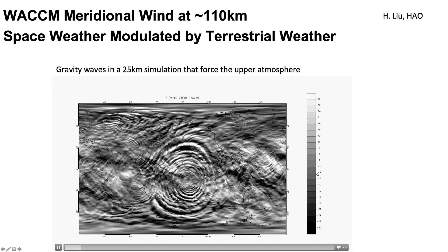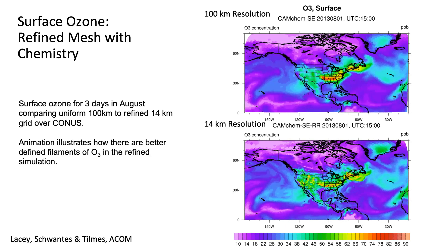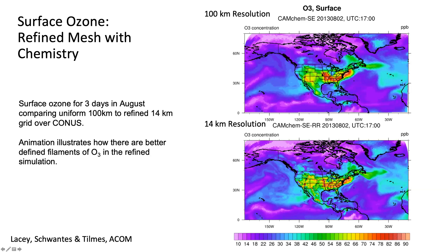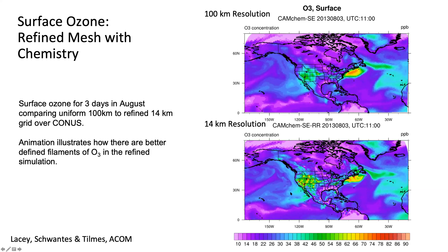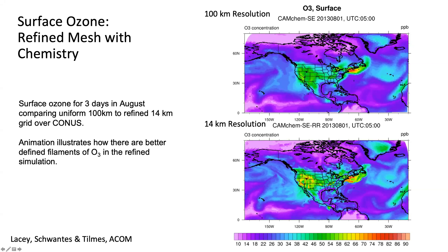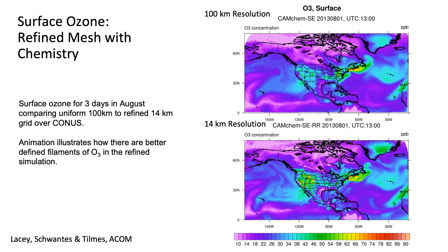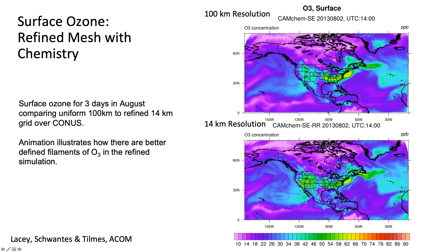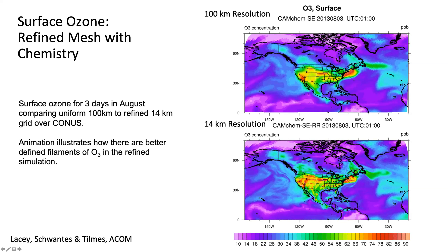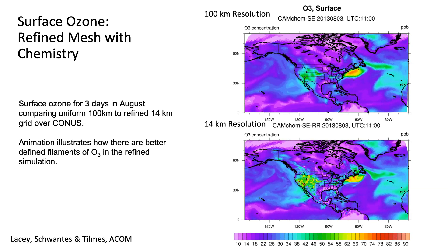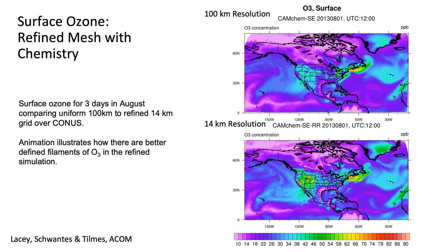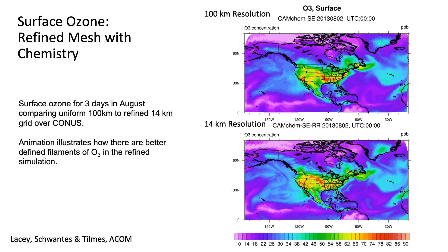This is a surface ozone representation. The top is 100-kilometer resolution near-surface ozone. The bottom is a refined mesh 14-kilometer version of the simulation, just three days in August. You can see the modulation of ozone with the diurnal cycle and the filamentation and high-resolution structure you get in the 14-kilometer simulation, as well as more of the extremes throughout the simulation that are more representative of, for example, urban areas. This illustrates how we can better resolve all these things.